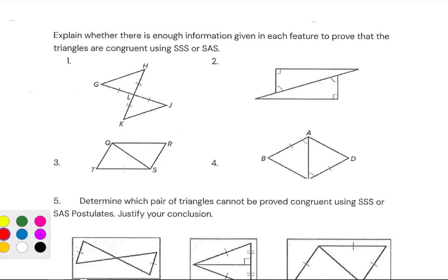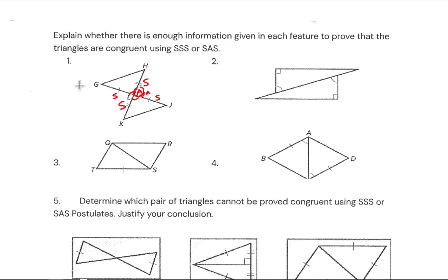Now we're looking to see if there's enough information. We've got an angle — a pair of vertical angles at L — and that gives us the Side-Angle-Side pattern. So those two triangles are going to be congruent by Side-Angle-Side.